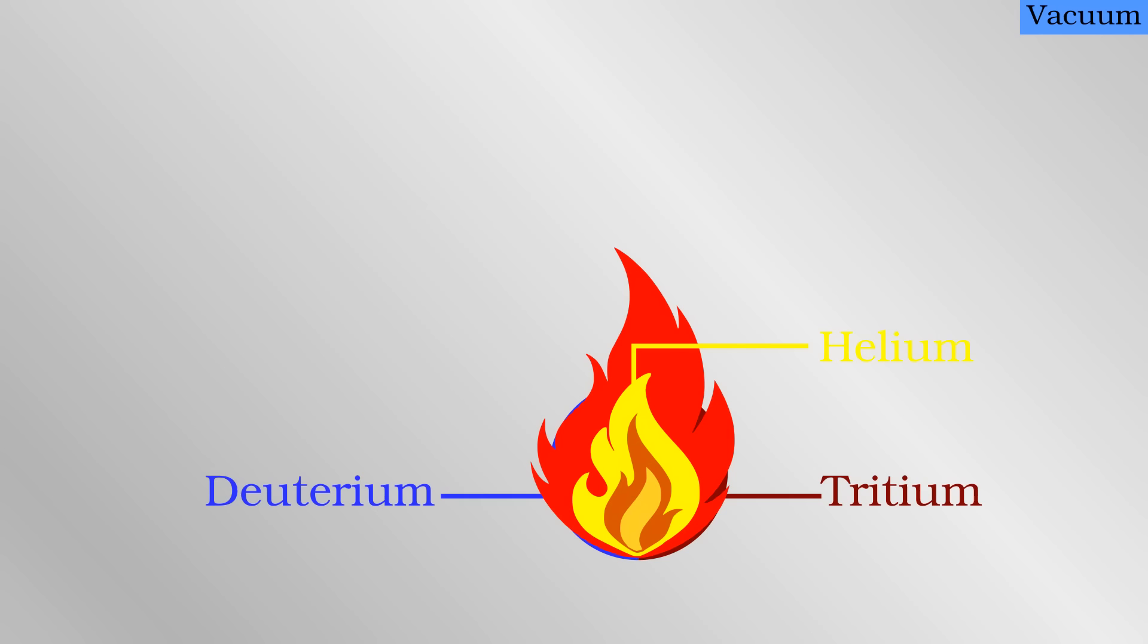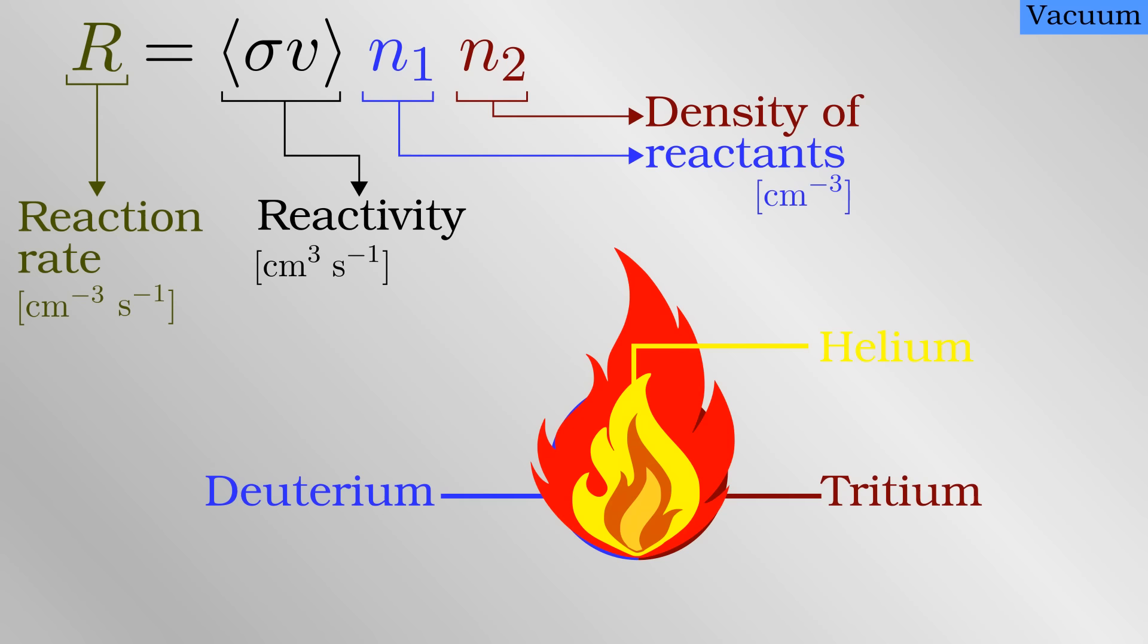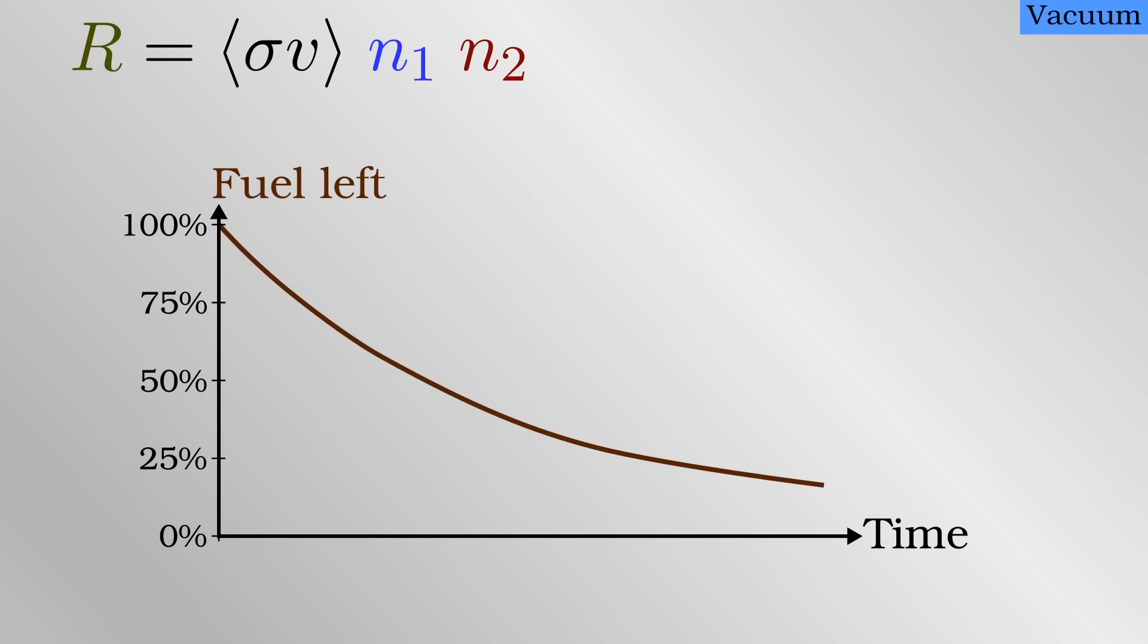Once everything is up and running, fusion reactions produce stable helium-4 nuclei which do not react any further. Helium-4 is sometimes called ash and the fuel is said to have burned up. The rate of thermonuclear fusion in a given volume of plasma is given by the reactivity multiplied by the densities of each of the reactants. As the fuel reacts, there is proportionately less and less of it in the plasma, so the reaction rate drops. In other words, the more of the fuel that has already burned up, the slower it will continue to burn.